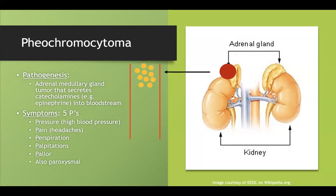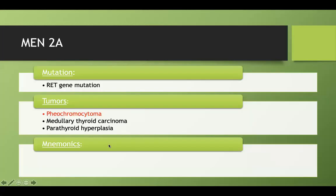On tests, pheochromocytoma is sometimes presented as secondary hypertension where somebody is on three or four blood pressure medications and it's just not getting better, and they also have some of these other symptoms. Consider a pheo in that case.